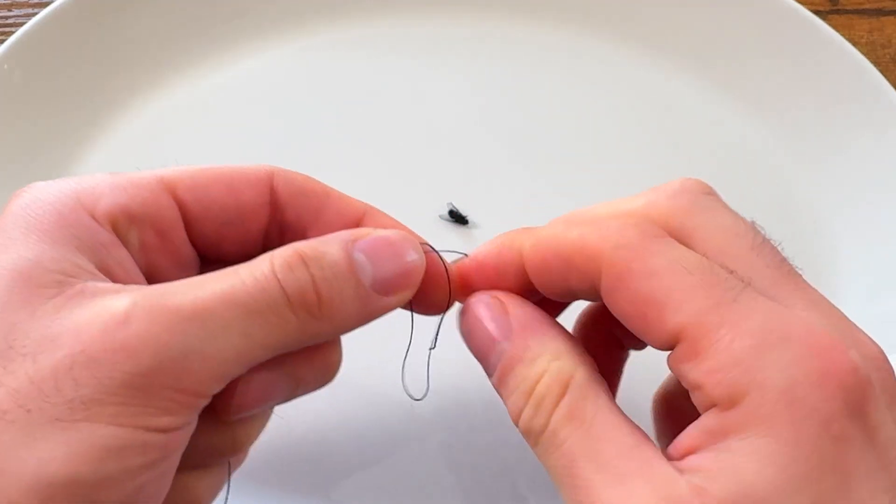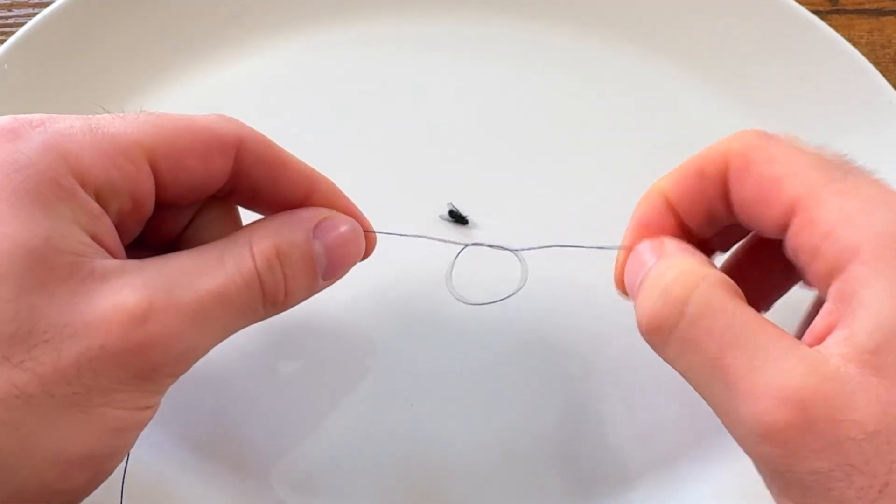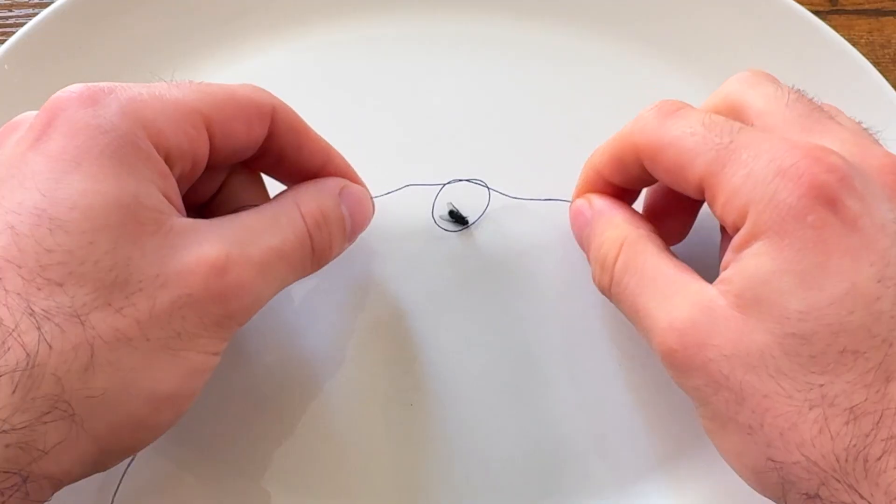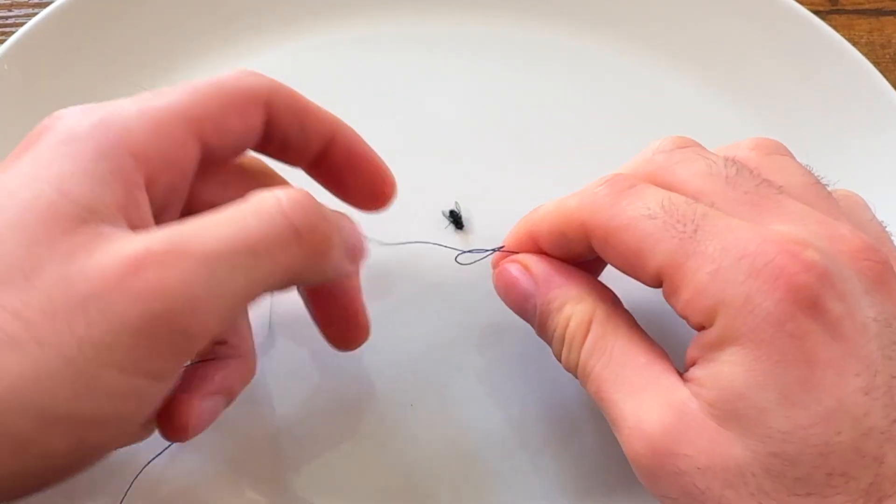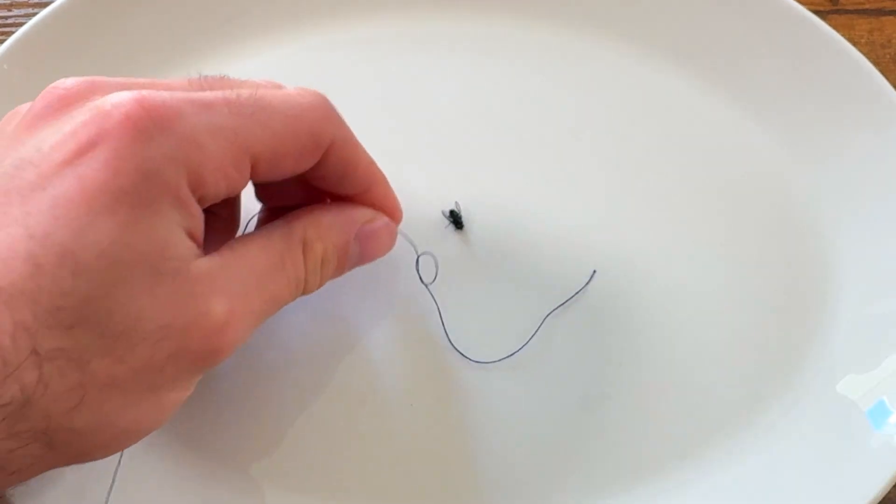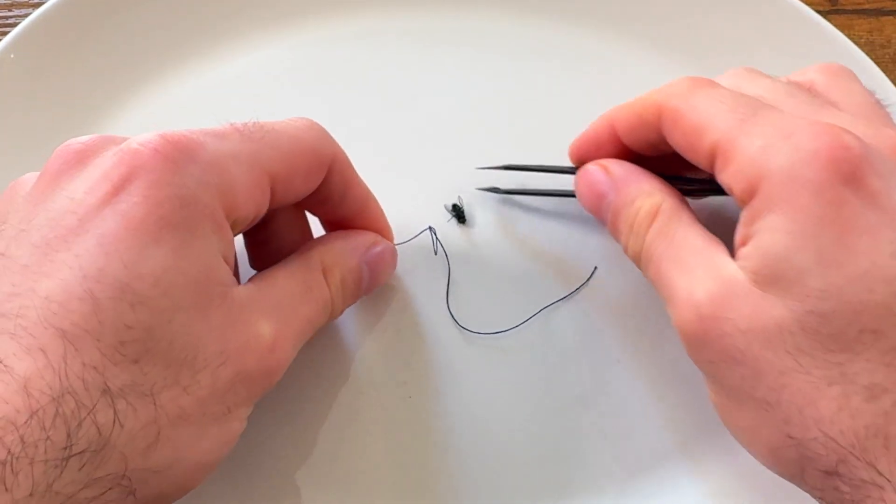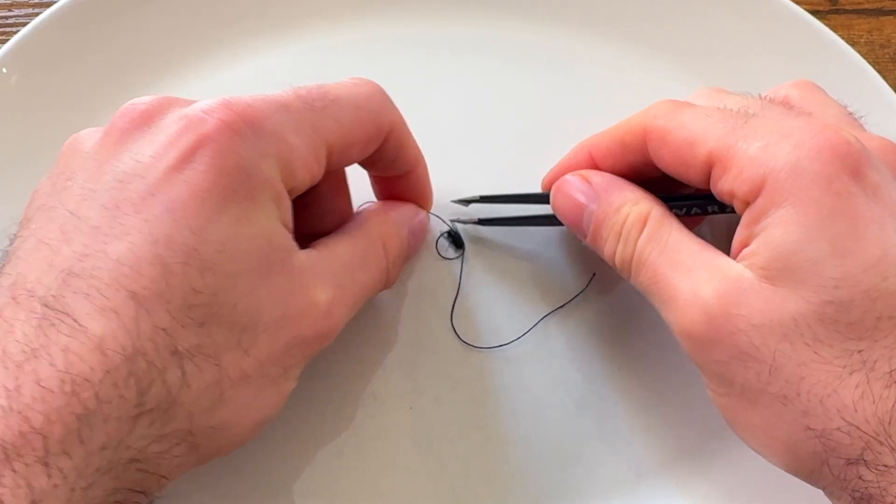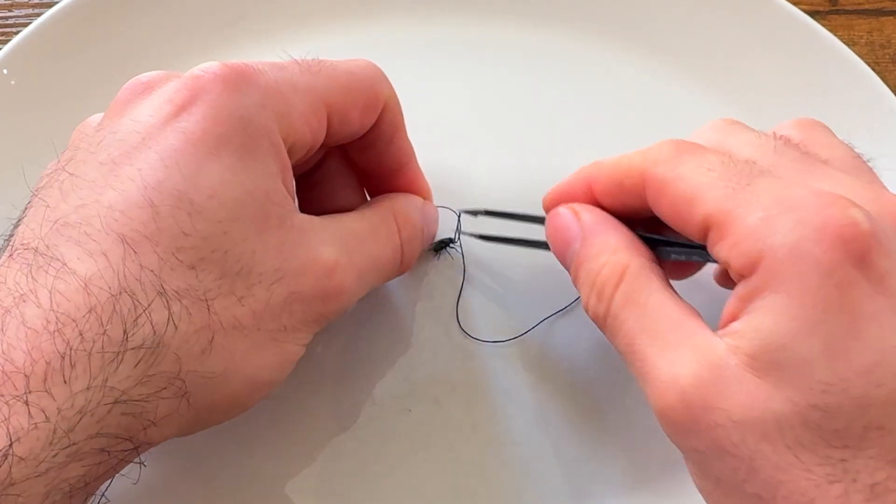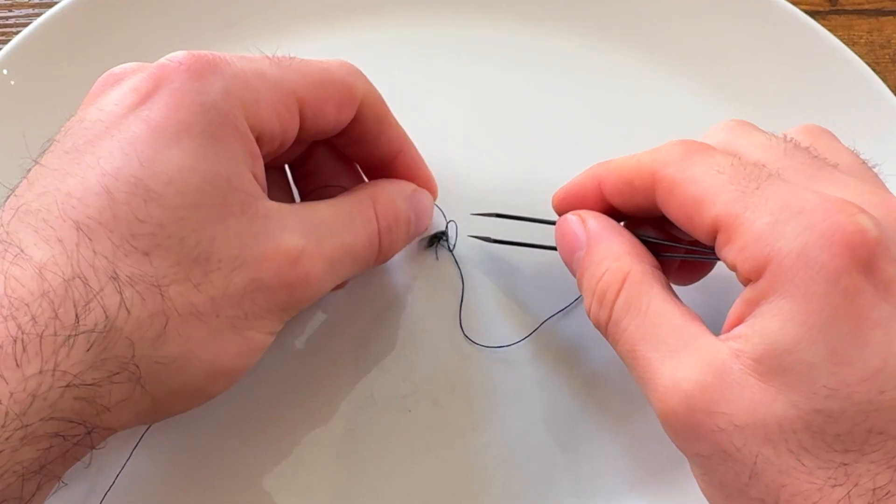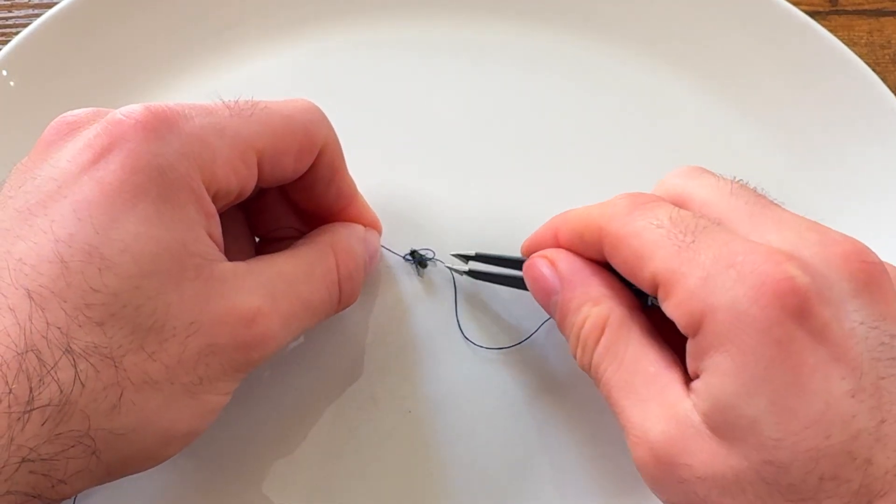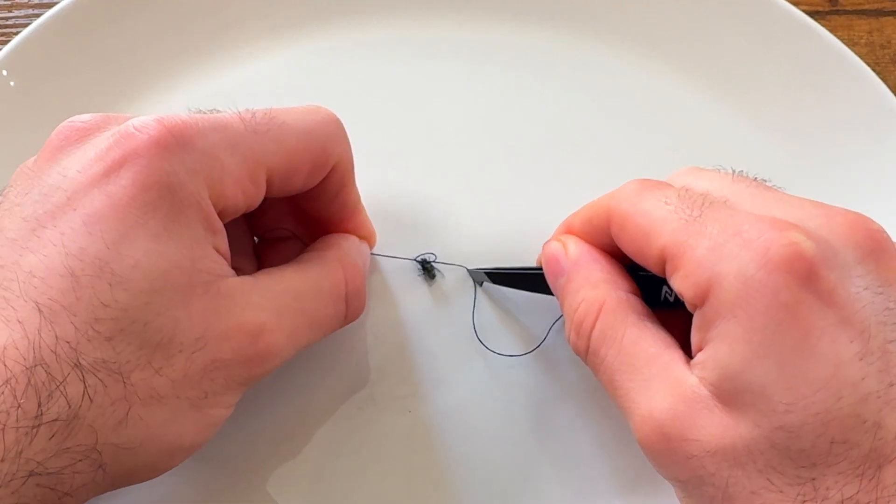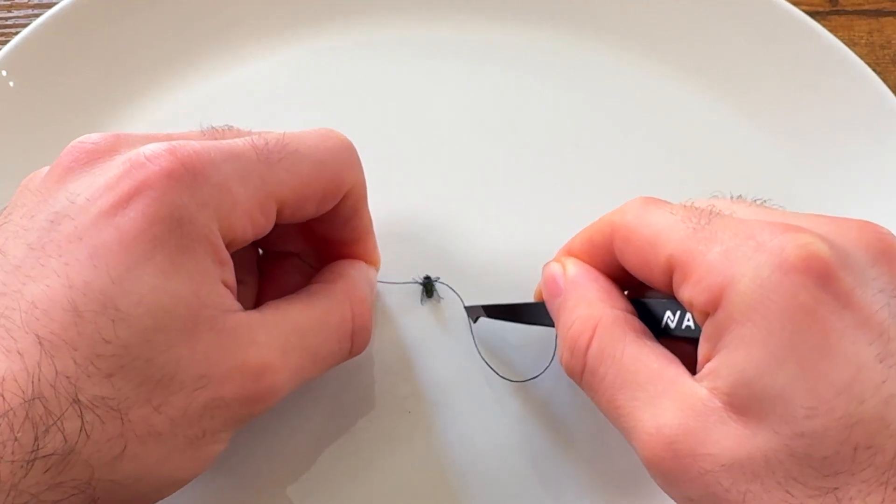This looks like it should be easy, but it's actually so hard because he has little hairs on them. So every time I put the thread close to him, it kind of pushes him away. It doesn't go around his neck, but the tweezer should help. Yes. Yes. Come on. Yes. No.